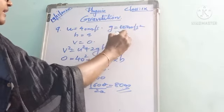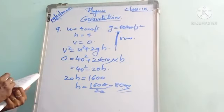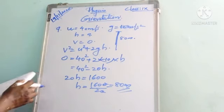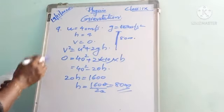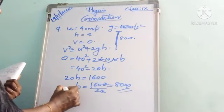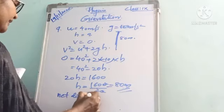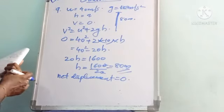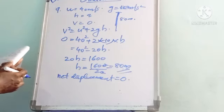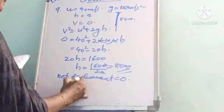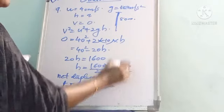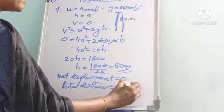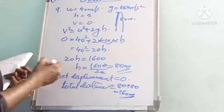Net displacement = 0 because the initial and final positions coincide (stone returns to ground). Total distance = 80 + 80 = 160 m, as the stone goes up 80 m and comes back down 80 m.